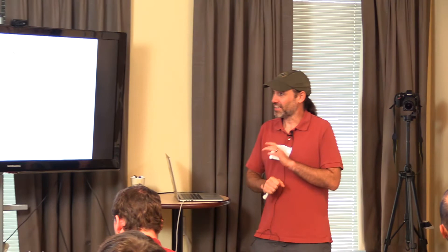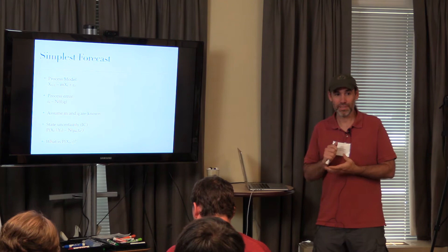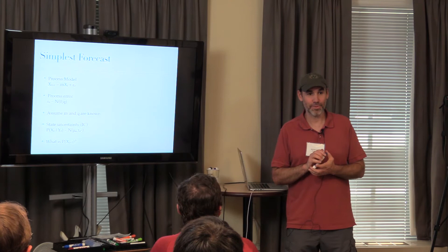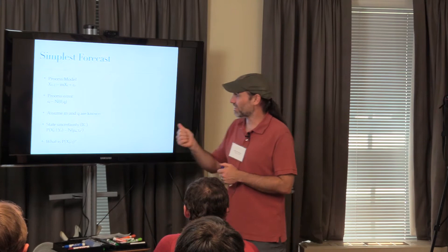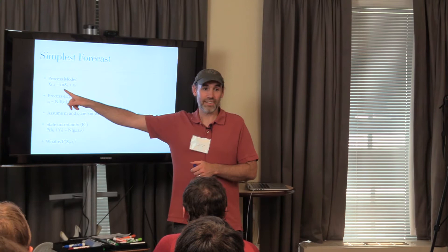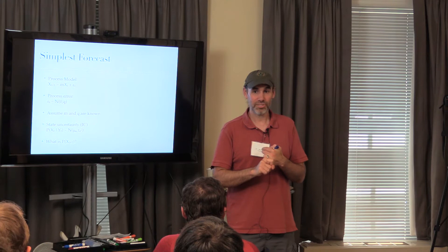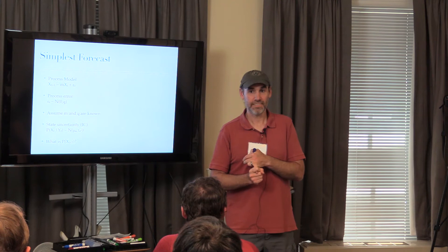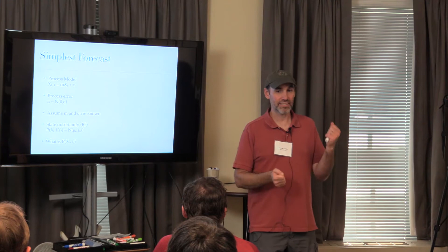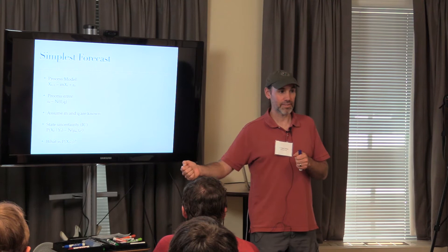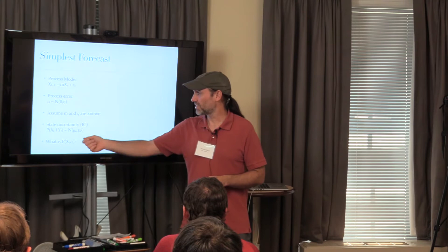So how do we figure out our forecast? We went over five different ways to make a forecast this morning. One of them gives the most elegant solution here: we can derive this analytically, because the initial condition is normal, the process error is normal, and the model is linear. Since it's linear, analytical approaches to propagating moments will work. Since everything is Gaussian, the Gaussian is fully defined by its mean and variance—we're not losing information in higher moments—and a linear transformation of a normal comes out normal on the other side.